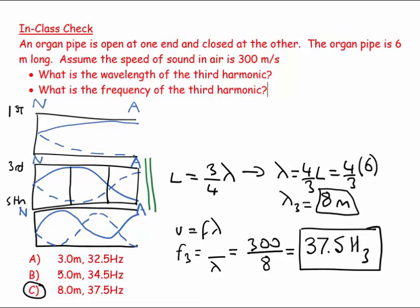So it's the same skill, and there's a bit of conceptual understanding that you need at the beginning — the pattern is a little bit more complicated — and it turns out that you cannot have an even number harmonic. You can't have the second, fourth, or sixth harmonic for an organ pipe that's open at one end and closed at the other. So there we have it.